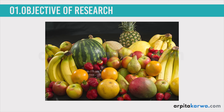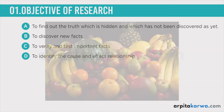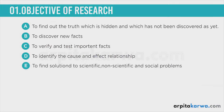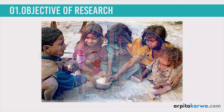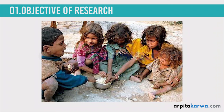The last objective is that research is conducted to find solutions to scientific, non-scientific, and social problems. For example, there is much research being done in the field of cancer to find out how it can be cured. New vaccines and radiation solutions have come up only after research. Even social problems like poverty or unemployment are addressed — whenever a government program is launched, research is done beforehand to find out how that program can help people become more economically sustainable.